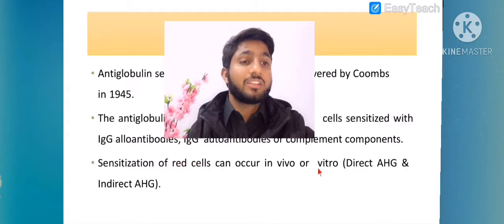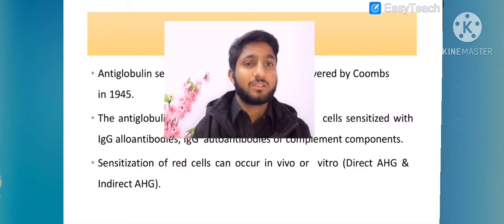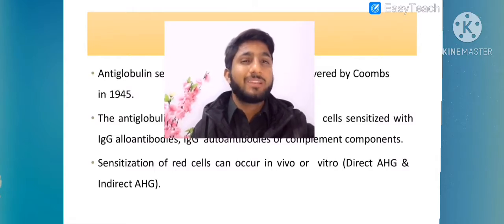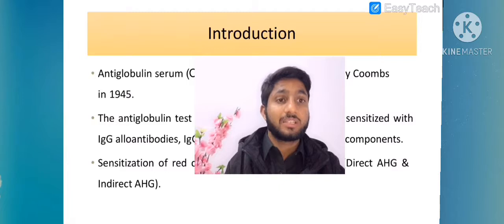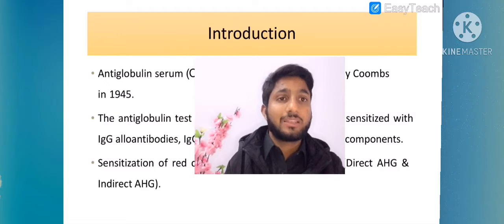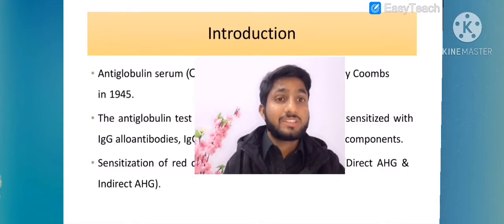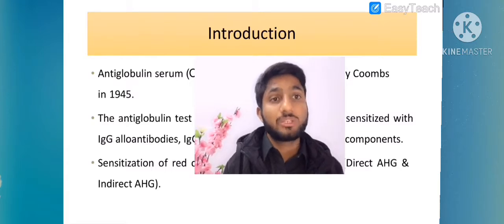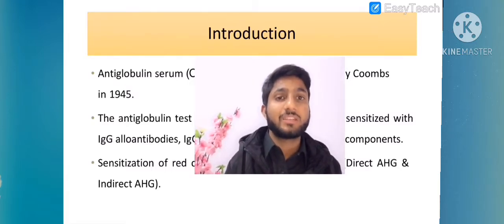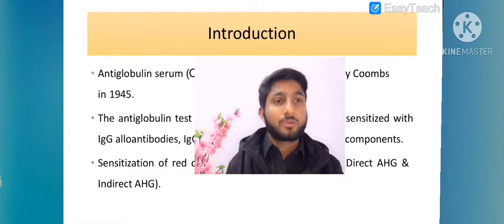Sensitization of red cells can occur in vivo or in vitro, so there is direct and indirect AHG testing. To prepare anti-human globulin, human sera is taken and injected into a model organism like rabbit. The human sera contains IgG antibodies, and antibodies against these are isolated from the model organism, purified, and then used for testing purposes in blood banks where they are called Coombs test.